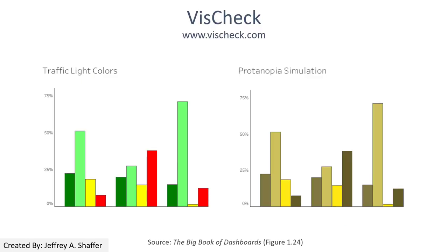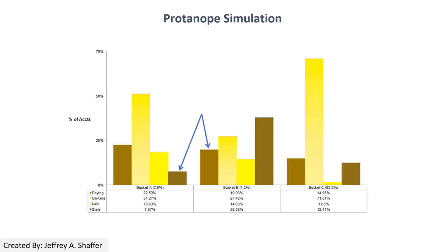If we use traffic light colors in visualizations, people with CVD will not be able to tell the difference between red and green. If you zoom in, you can see they appear very similar — it's nearly impossible to distinguish between dark red and dark green under CVD simulation.